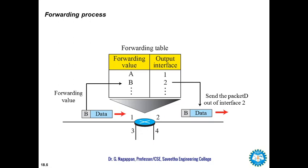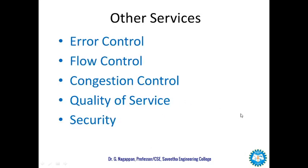When a router receives a packet from one of its attached networks, it needs to forward the packet to another attached network — in unicast routing, one to one; in multicast routing, one to many. To make this decision, the router uses a piece of information in the packet header: the destination address or a label, to find the corresponding interface number. For example, if the packet is to be forwarded to destination B, it is sent through output interface 2, and the destination address remains the same. The data in the packet should never be modified during forwarding.